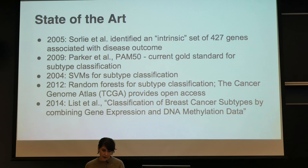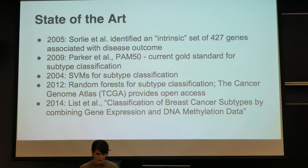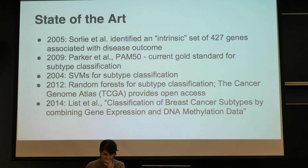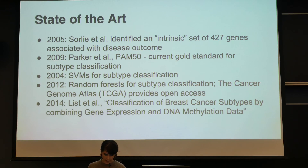Looking at the state of the art for the subtype problem: initial approaches didn't use machine learning at all — they identified subsets of genes considered good indicators of specific subtypes. The PAM50 set of 50 genes is the current gold standard for subtype classification, but it was developed based on heuristics from doctors rather than statistical methods. In 2004 a publication used SVMs for breast cancer subtype classification, but their methodology was poor and accuracy was low. We're using the 2014 List et al. paper as the state of the art — they use random forests with the PAM50 dataset.